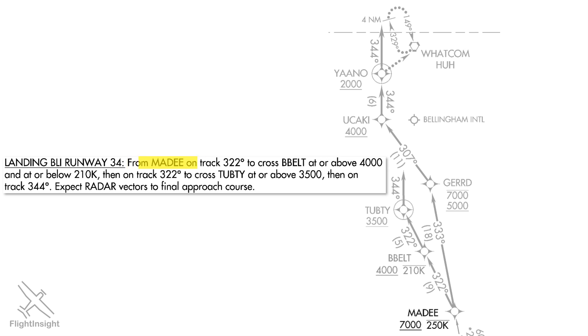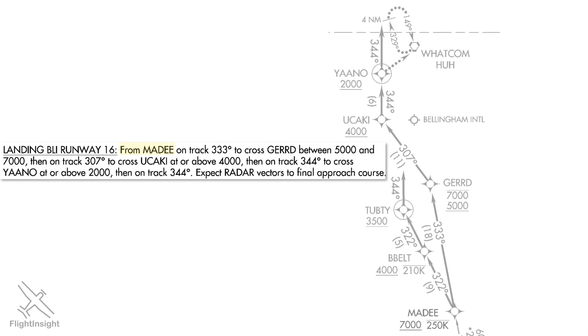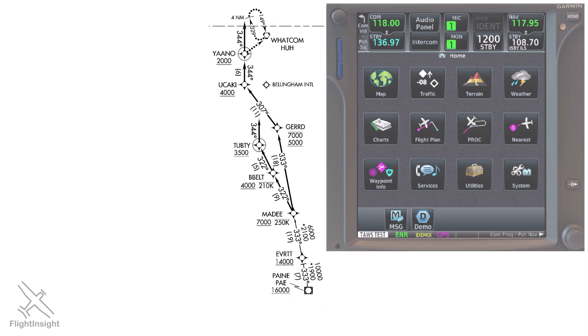Here's the textual description of the route when Bellingham is landing on runway 34. We'll be going to Belt, then Tubtee, then on a track of 344 degrees to get vectors to the approach. If we were using the south runway 16, we'd follow that other route, which takes us out north of Bellingham towards that dashed line, which is the Canadian border. This gives us more time to descend, so notice the altitude minimums are a bit higher than on the route for runway 34, which goes more directly to the airport.